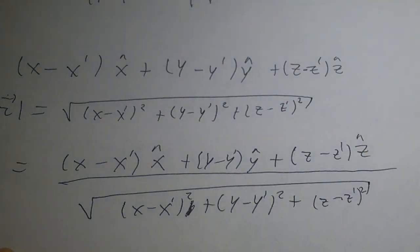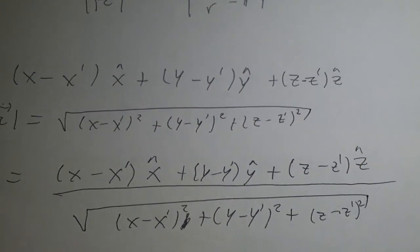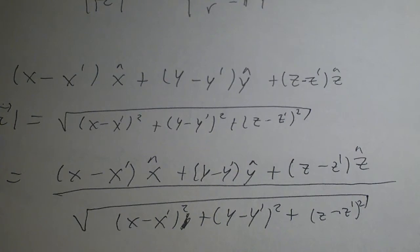Here's an interesting application. In electrodynamics, a source point r prime is where an electric charge is located at position x, y, z, and the field point is r. You can calculate the electric or magnetic field by looking at the separation vector, as stated previously.